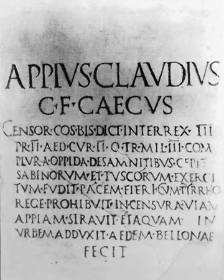The voiceless plosives P, T, K in Latin were likely less aspirated than voiceless plosives at the beginning of words in English; for example, Latin /k/ was not as strongly aspirated as K in 'kind' but more like K in 'sky' or 'look'. Some Greek words beginning with voiceless plosives P, T, K, when borrowed into colloquial Latin, were spelled with voiced plosives B, D, G, suggesting Latin speakers felt the Greek voiceless plosives to sound less aspirated than their own native equivalents.